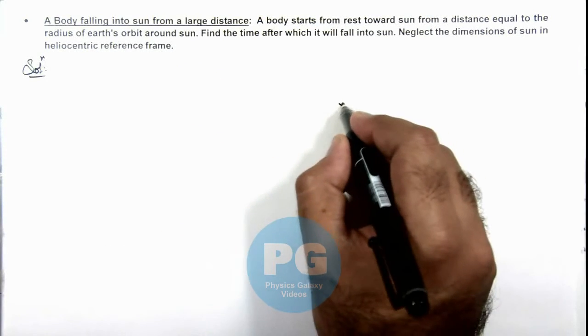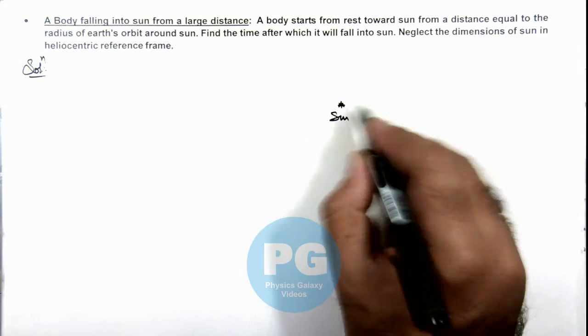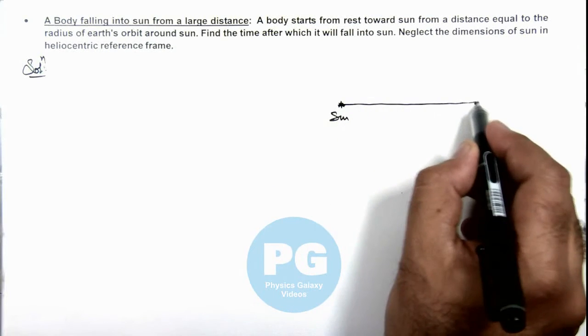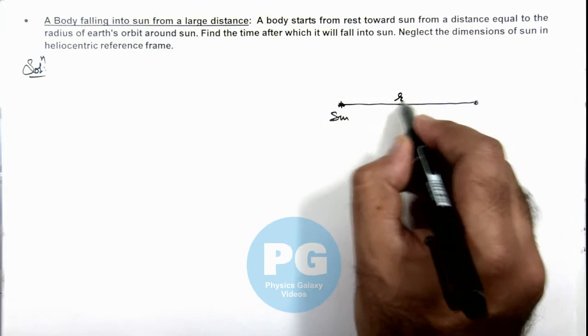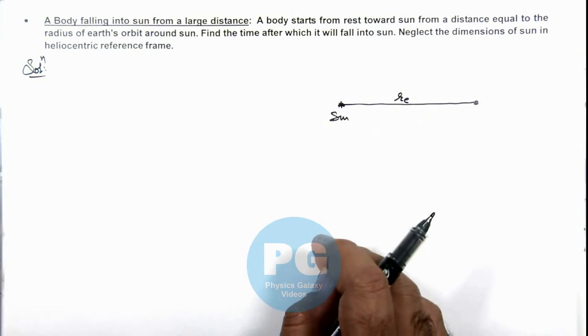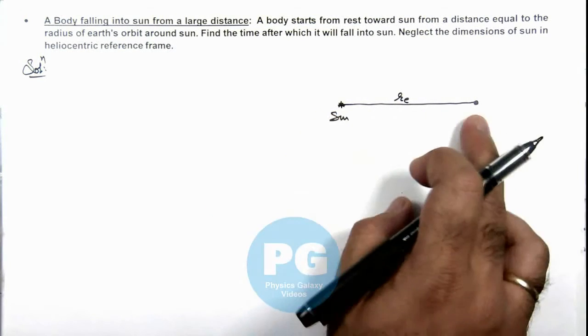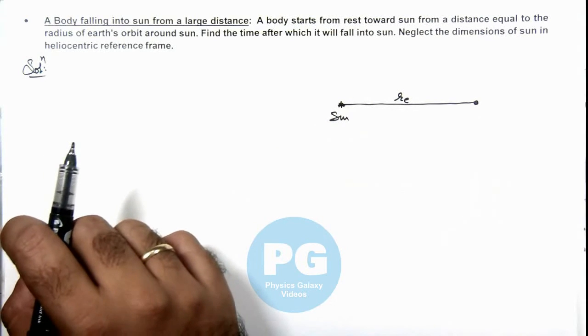Say if this is sun, and a body is located at a distance equal to the radius of earth's orbit. Now if it starts falling it will be approaching sun in a straight line.